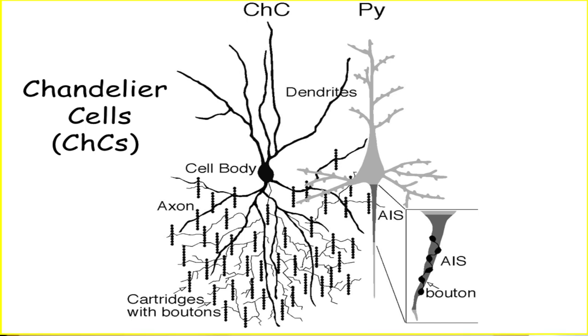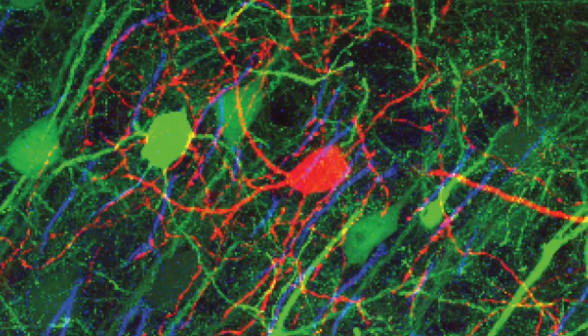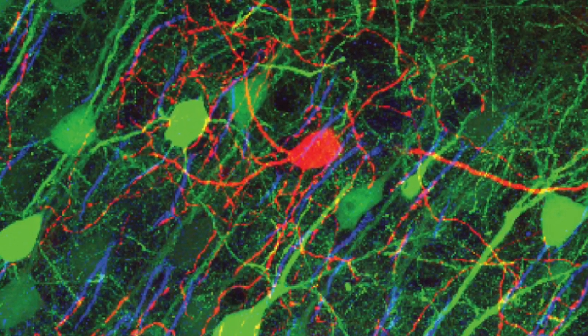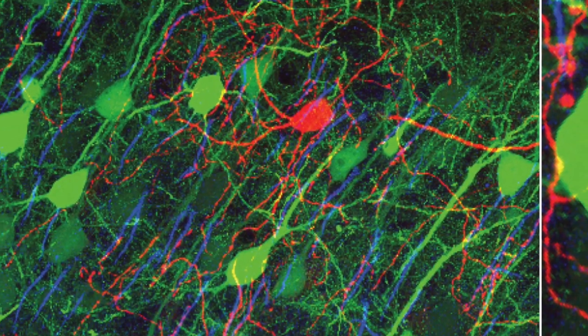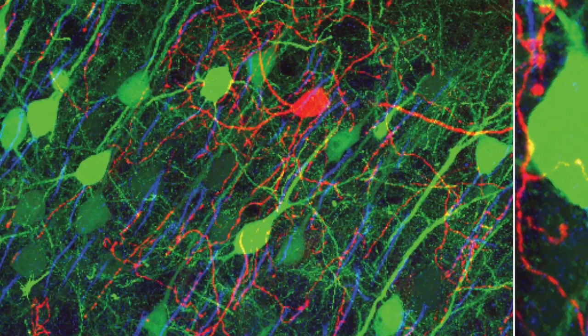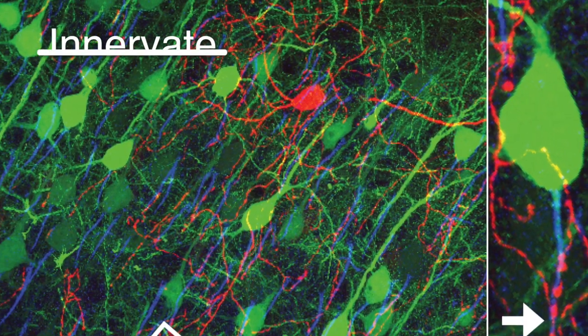This unique morphology or structure of the chandelier cell allows it to make contact with a wide variety of neighboring pyramidal neurons. Moreover, and importantly, unlike other interneuron subtypes, chandelier cells selectively innervate